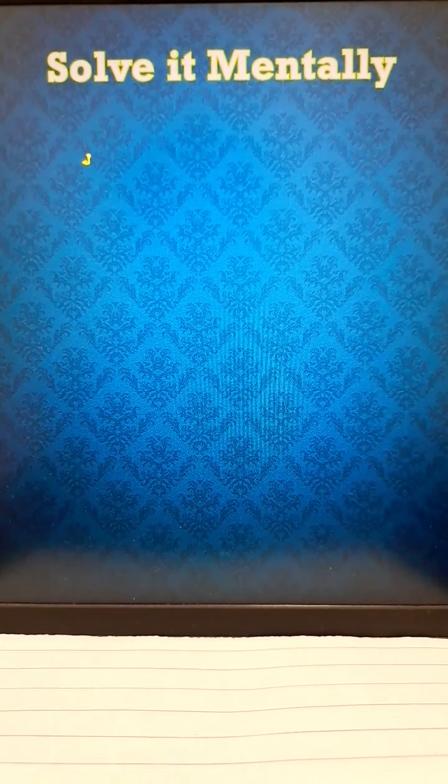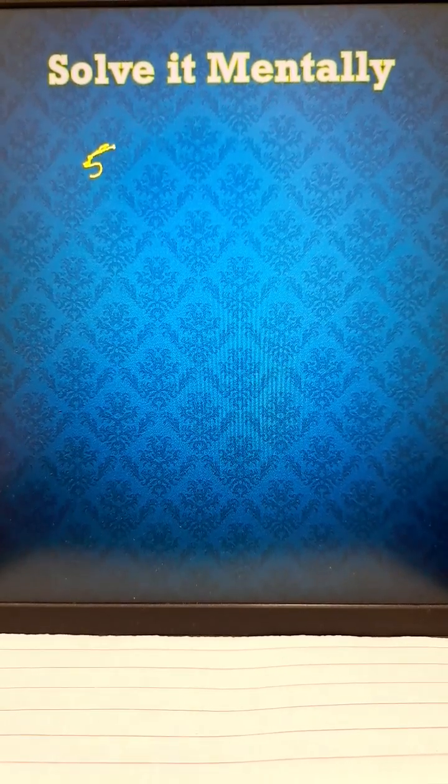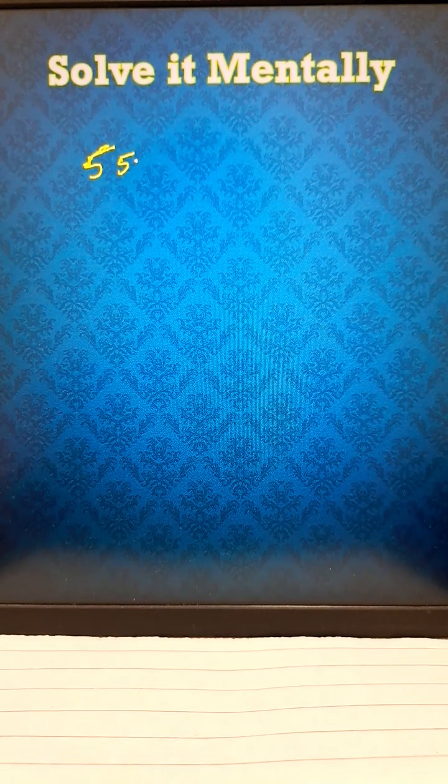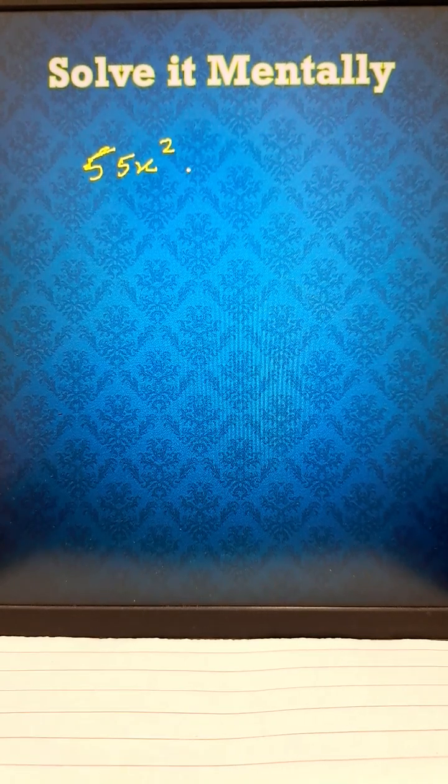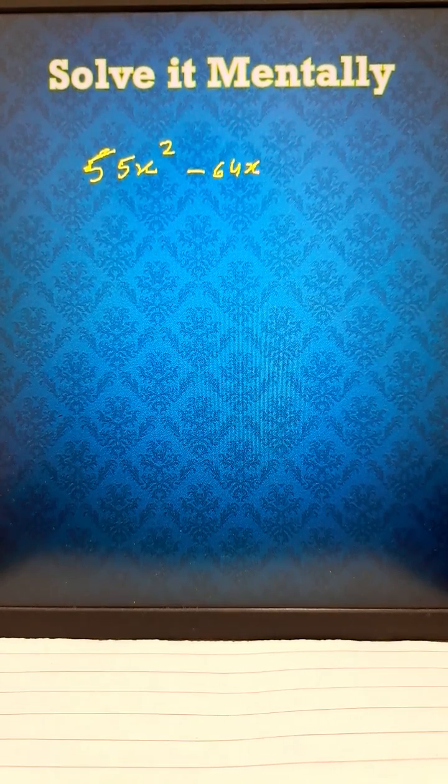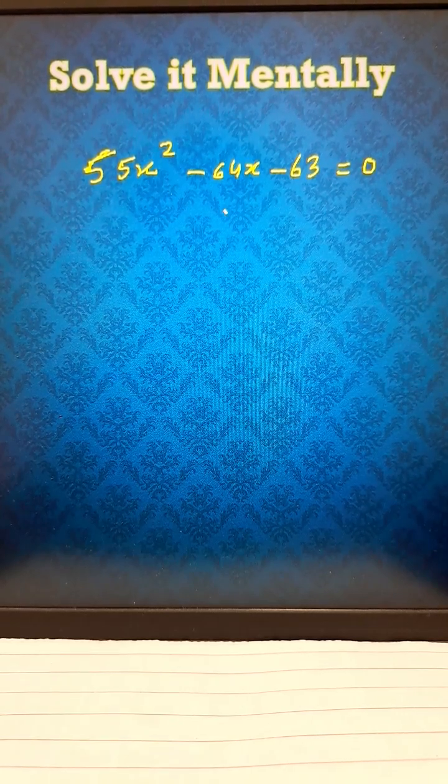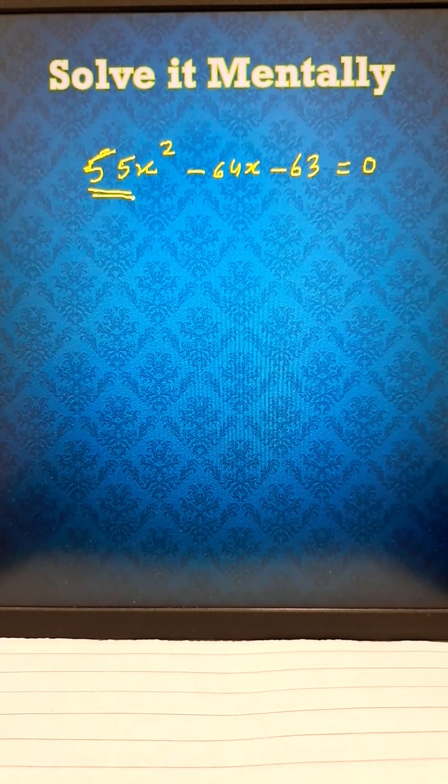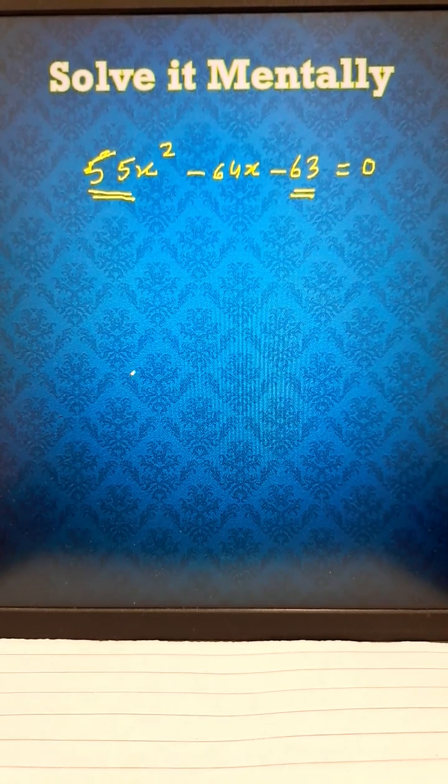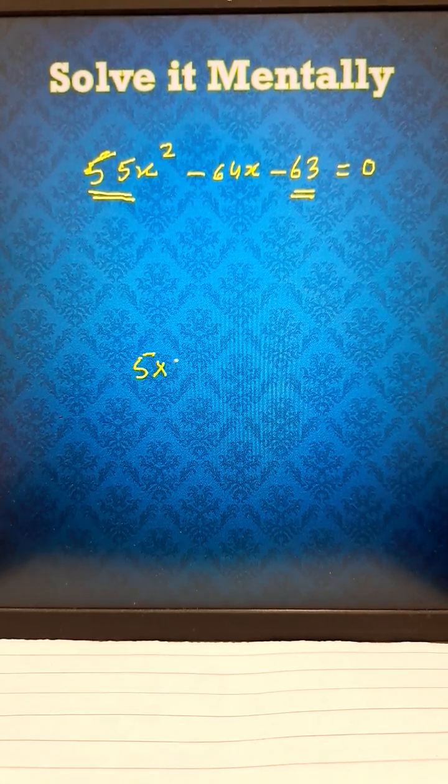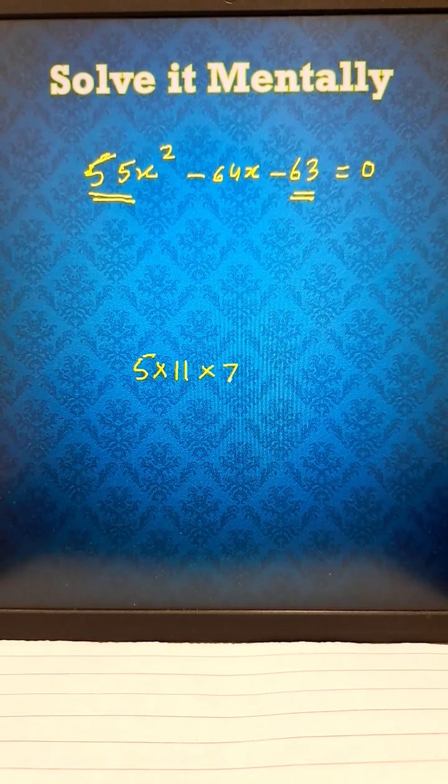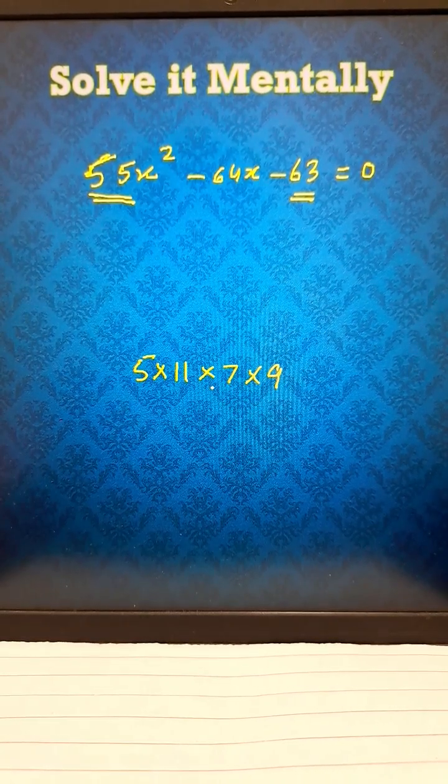Hey friends, look at this amazing shortcut trick. 55x² - 64x - 63 = 0. Huge quadratic equation, but 55 times 63 is 5 times 11 (55) and 7 times 9 (63). So can you see?